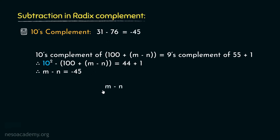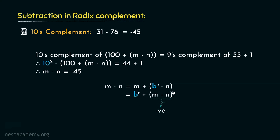So, while performing m minus n in radix complement, if the result doesn't generate any carry, we become certain that m minus n resulted in a negative value. We need to perform radix complement on the result and finally place the negative sign in front of the obtained value to achieve the familiar form. This is the logic behind the subtraction in radix complement.